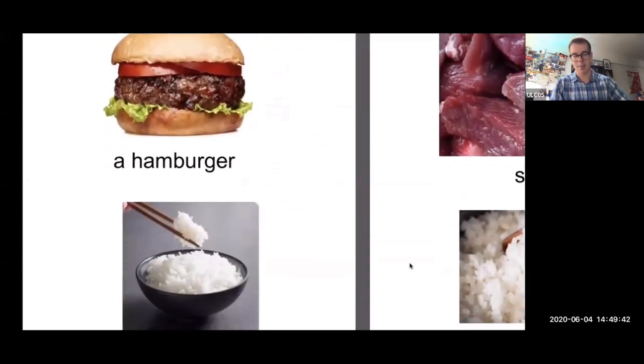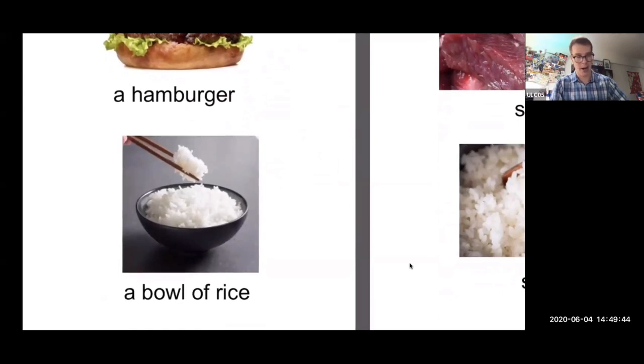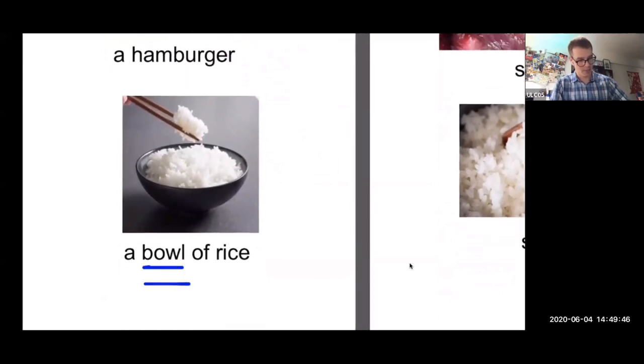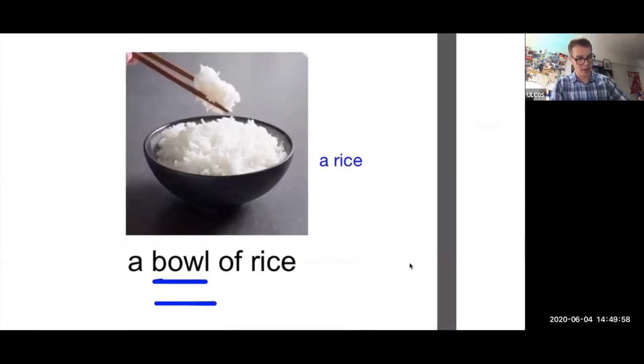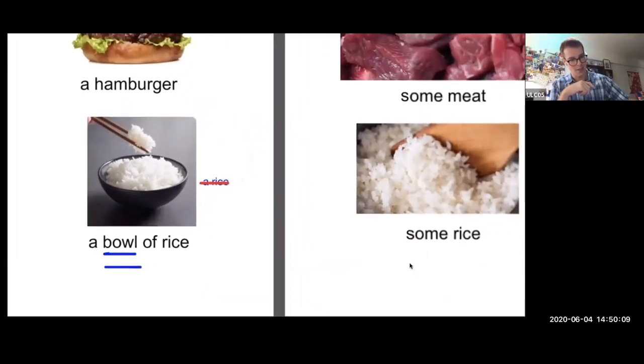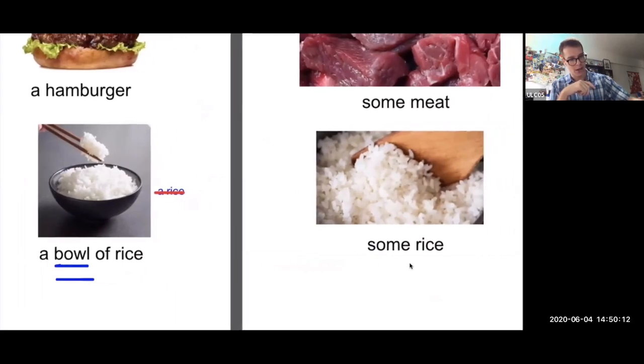So then here again, I just have a hamburger, I have a bowl of rice. There are some words that do specifically need a helper to be able to count. Because if I say 'a rice', this is not correct in English. We cannot say 'a rice'. Why not? Because this word is only used here with the uncountable.